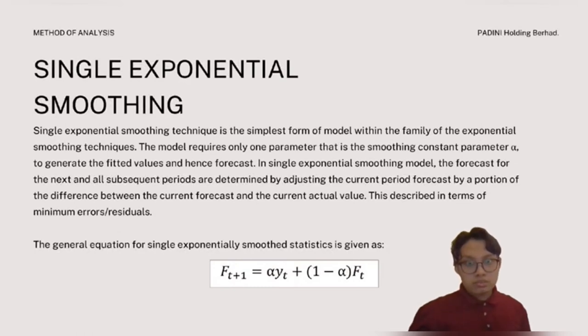Next, single exponential smoothing technique is the simplest form of the model within the family of exponential smoothing techniques. It requires only one smoothing constant parameter alpha to generate the fitted values and hence forecast. In this model, the forecast for the next and all subsequent periods are determined by adjusting the current period forecast by a portion of the difference between the current forecast and the current actual value. This is described in terms of minimum errors or residual. The equation is FT+1 = alpha*YT + (1-alpha)*FT.